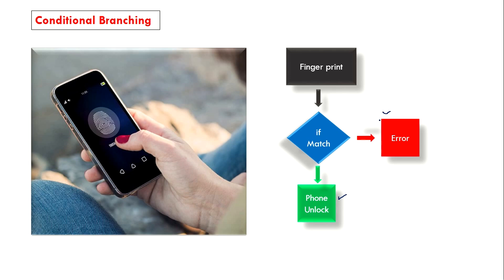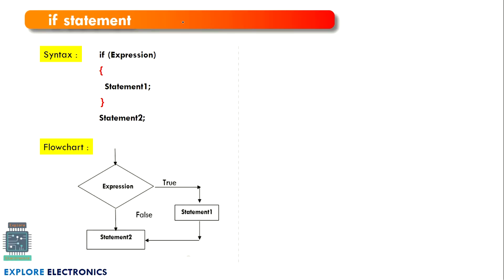Now let us understand the various ways to achieve conditional branching in programming. For the if statement, the syntax has the keyword 'if', inside which we write an expression — the condition we want to check. If this condition is satisfied, the statements we need to execute are written inside the curly braces, and after coming out of the if statement, the remaining statements are written outside.